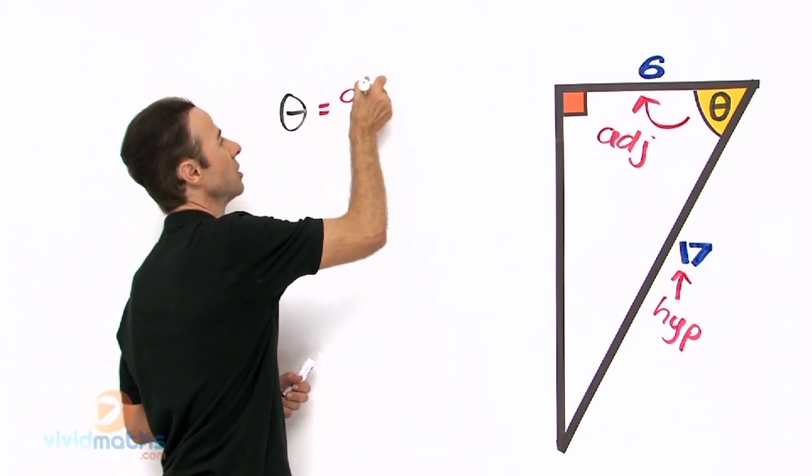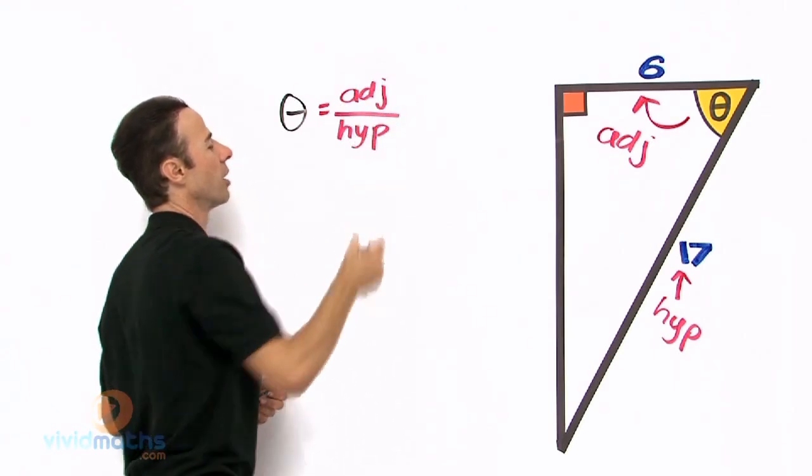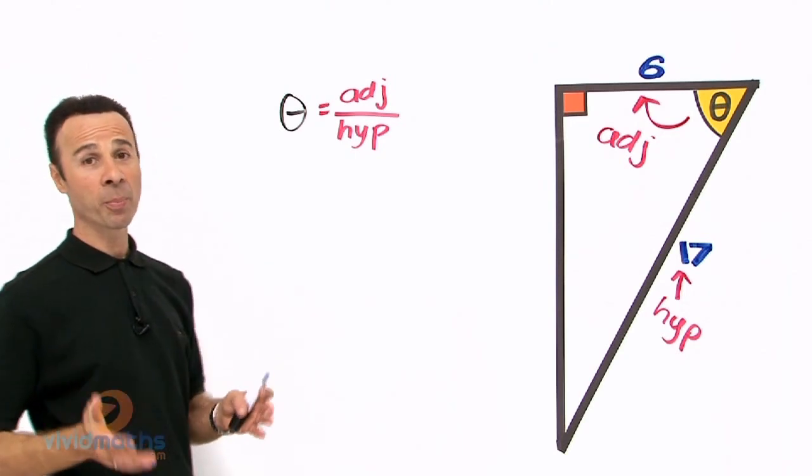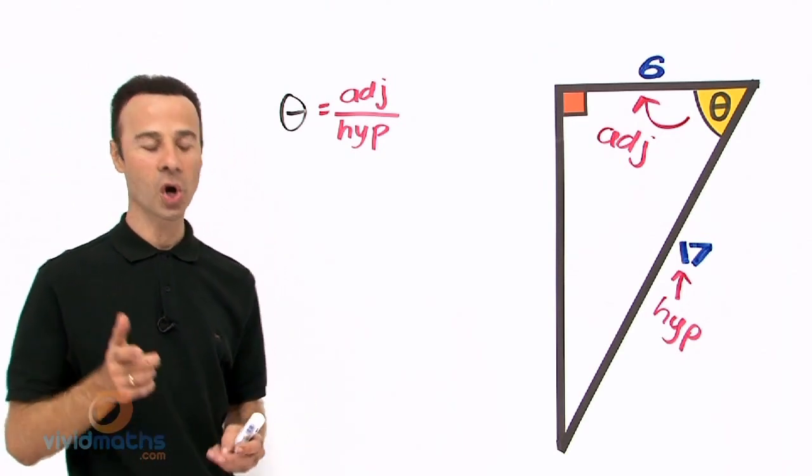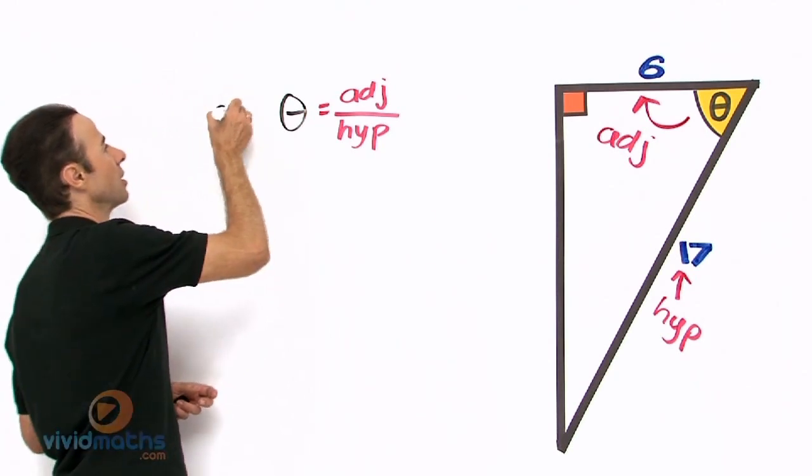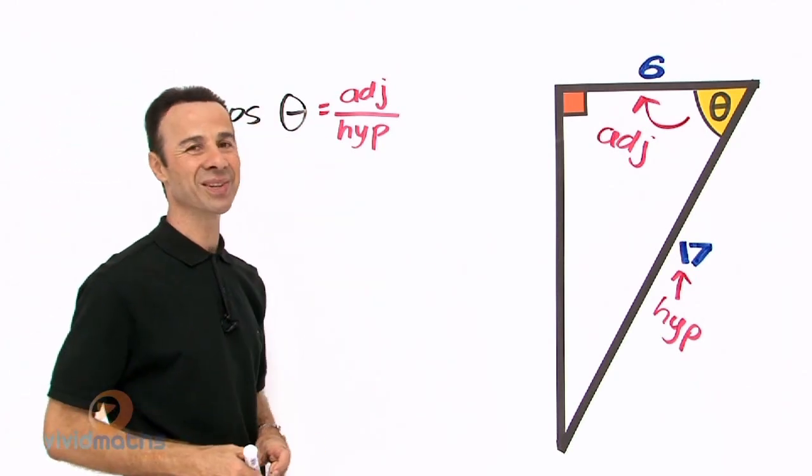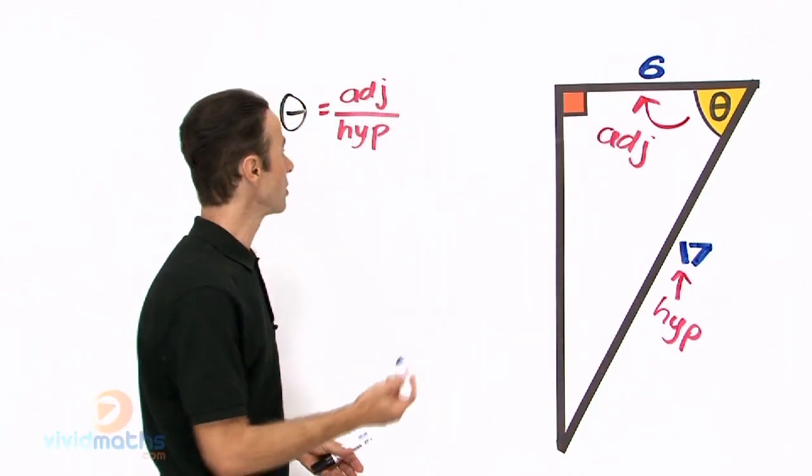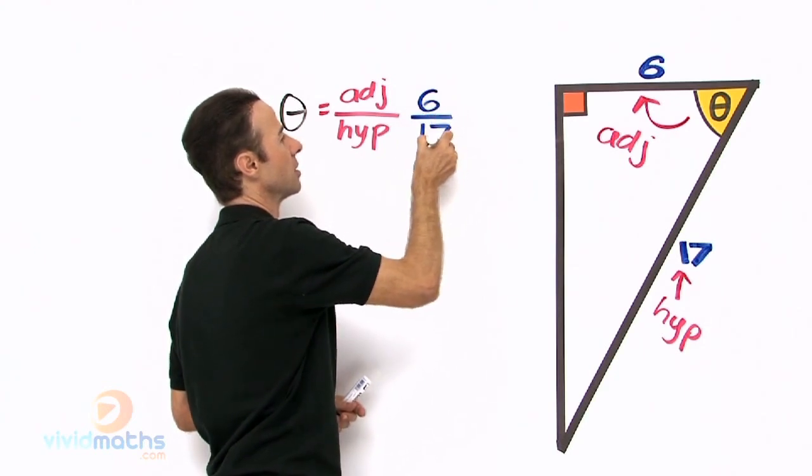So theta equals adjacent over hypotenuse. Now let's work out: adjacent over hypotenuse—is it a sine? No. Is it a tan? No. It is a cos, isn't it. Let's put the cos in there. Cos theta equals adjacent over hypotenuse, and what does that equal? Well it is 6 over 17 as we can see. Let's write that down: 6 over 17.